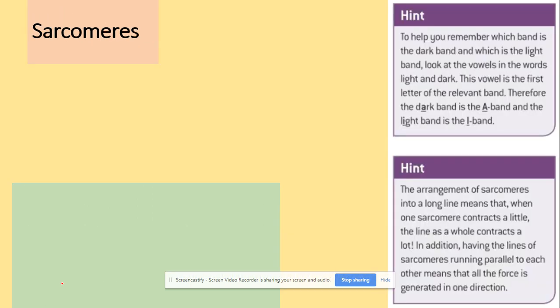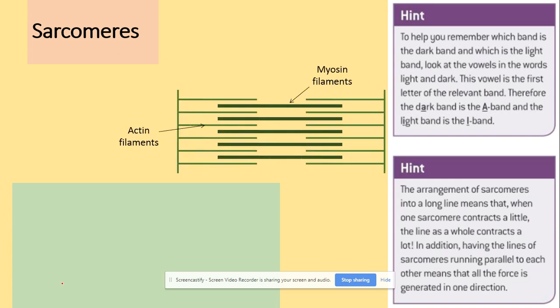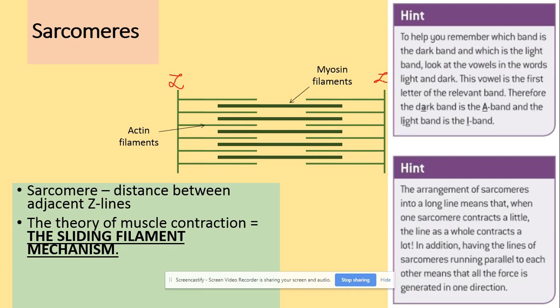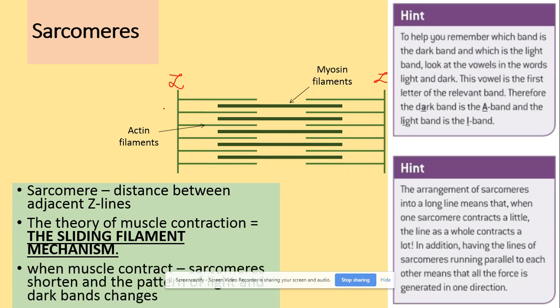Let's have a look now at the more detailed structures. We will start with the sarcomere. The sarcomere is this single unit here. Within the sarcomere we will see myosin filaments, which are thicker, and actin filaments in between, which are thinner. The sarcomere is the distance between the Z-lines. The sarcomere provides evidence for the sliding filament mechanism, because when the muscle contracts, the Z-lines get narrower — they come together.